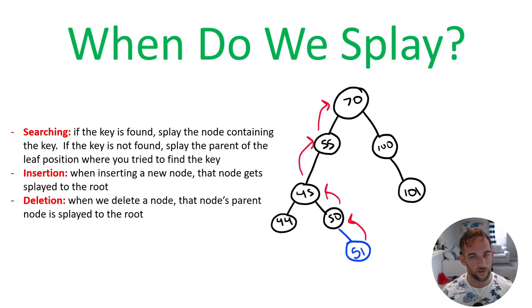So the next operation is insertion. So when we insert a node, anytime you insert a node, you splay that to the root of the tree. So in this instance, we want to insert 51 where I have highlighted blue. Because we performed a splay operation on 51, we inserted it, we need to move it all the way to the root. So we're just going to keep performing rotations until it becomes the new root of the tree.